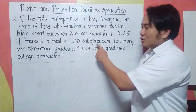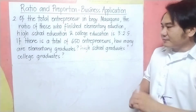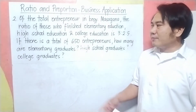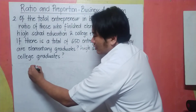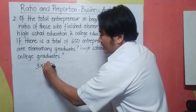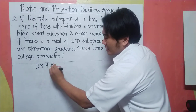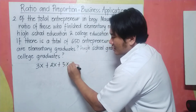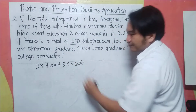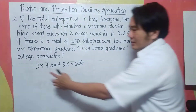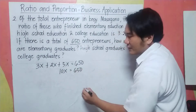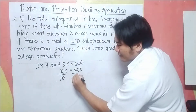And 5 represents the college education. Since there are 650 entrepreneurs, we need to find how many belong to each group. We let x as the number of entrepreneurs and multiply it to each ratio: 3x plus 2x plus 5x equals 650. We then divide both sides by 10 to solve for x.